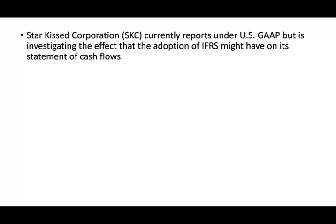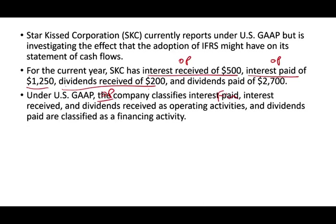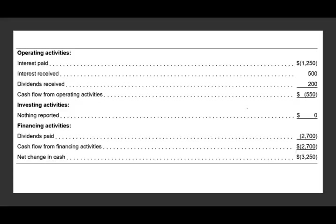Let's take a look at an example. Starkist Corporation currently reports under U.S. GAAP but is investigating the effect that adopting IFRS might have on its Statement of Cash Flows. For the current year, SKC has interest received of $500 — which is operating under U.S. GAAP; interest paid of $1,250 — also operating under U.S. GAAP; dividend received of $200 — operating; and dividend paid of $2,700 — financing under U.S. GAAP.